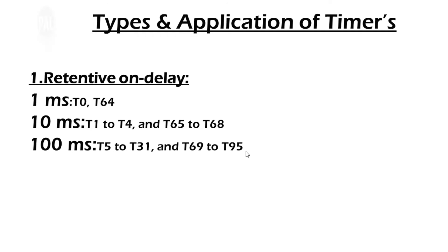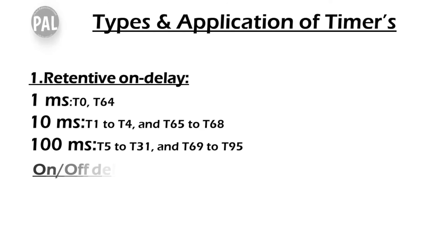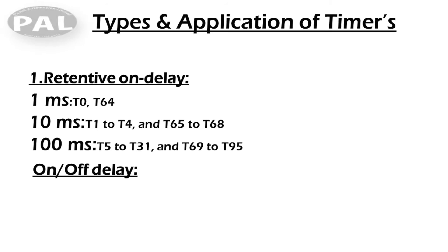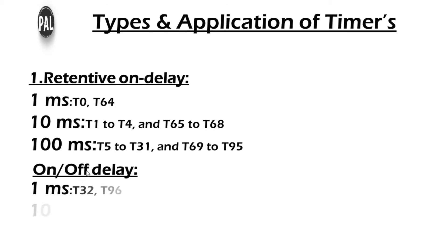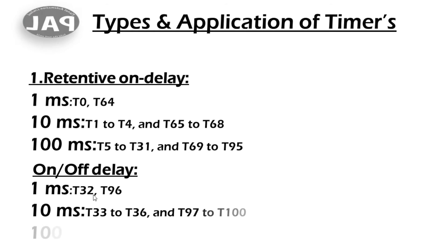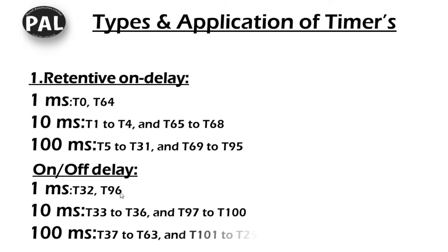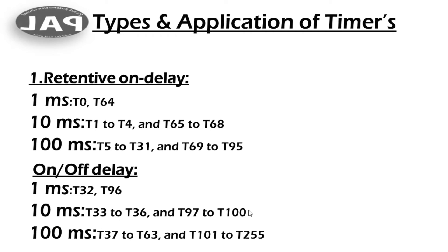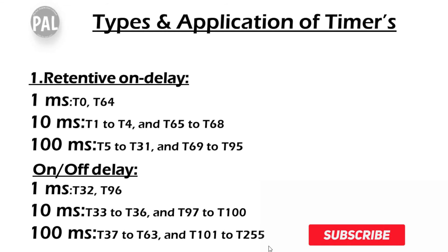I will describe what is 1 millisecond, 10 millisecond, and 100 millisecond. These are the most commonly used on-delay and on/off-delay timers. For on and off delay timers (TON/TOF): 1 millisecond timers are T32 and T96 — two timers. 10 millisecond timers are T33 to T36 and T97 to T100 — approximately eight timers. 100 millisecond timers are the huge range: T37 to T63 and T101 to T255.